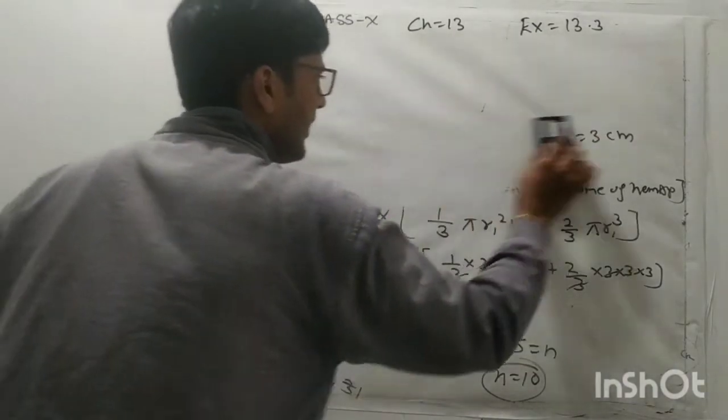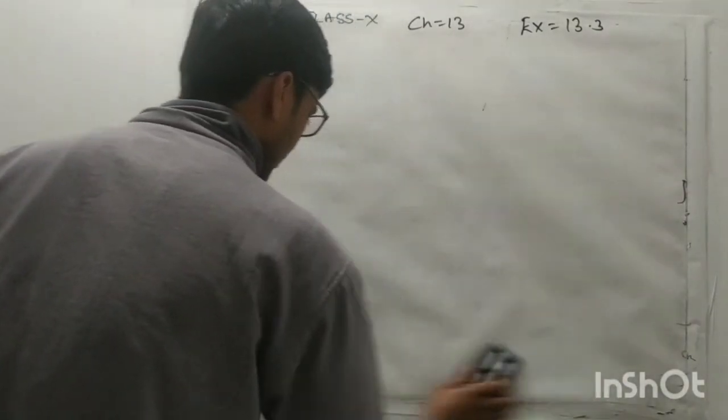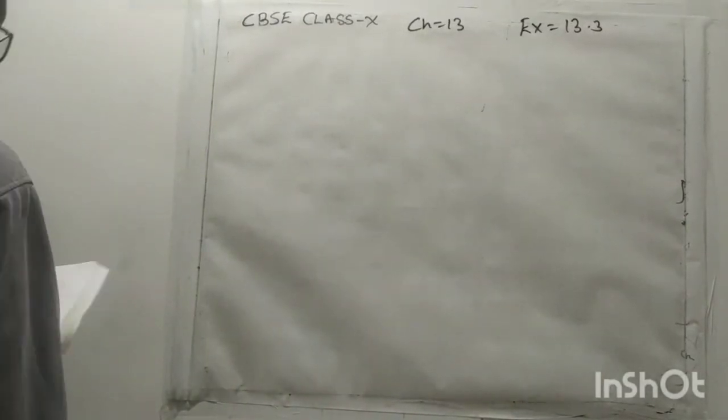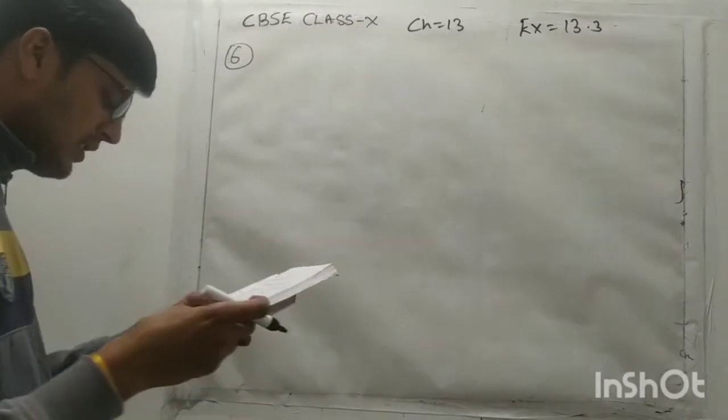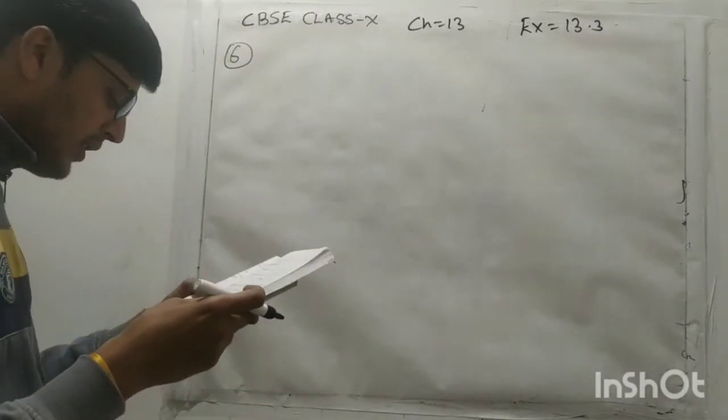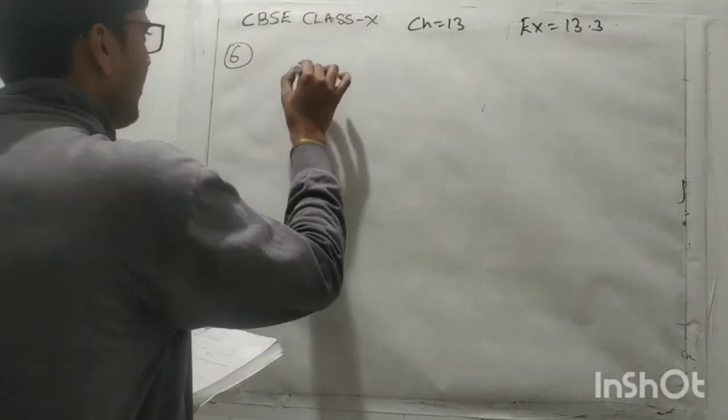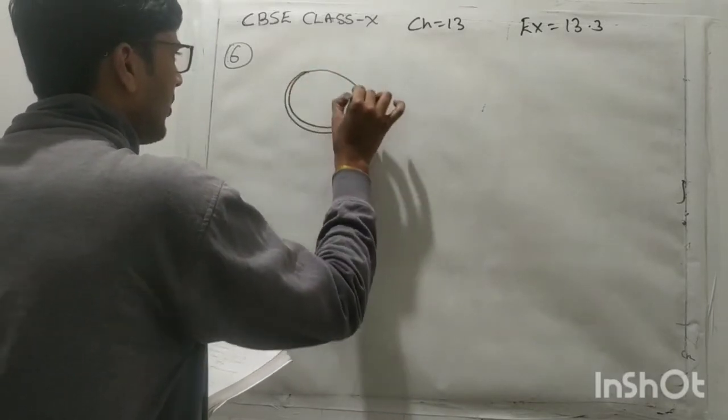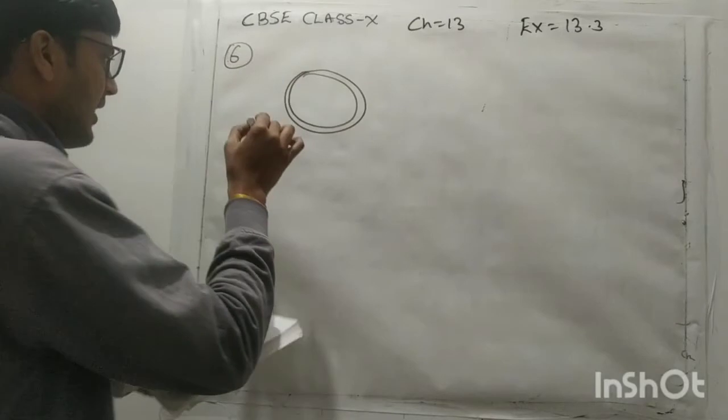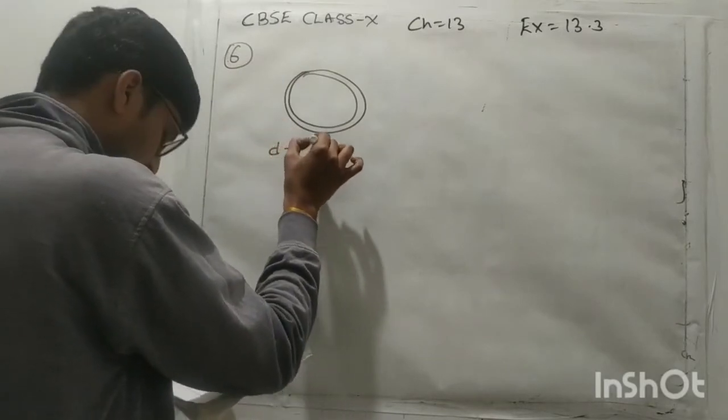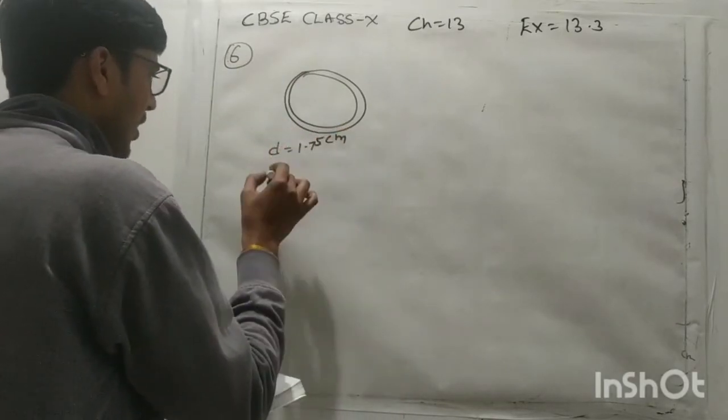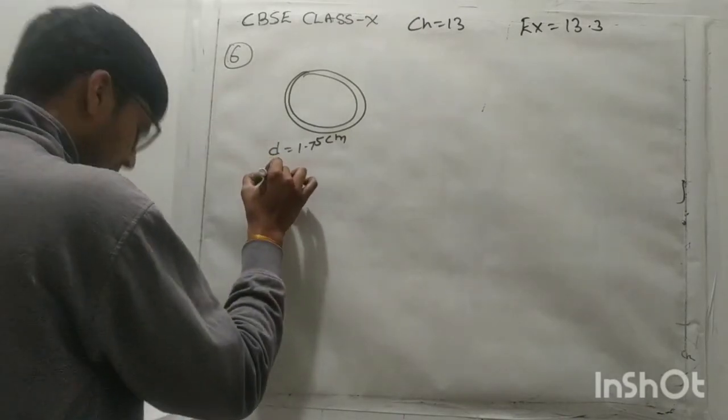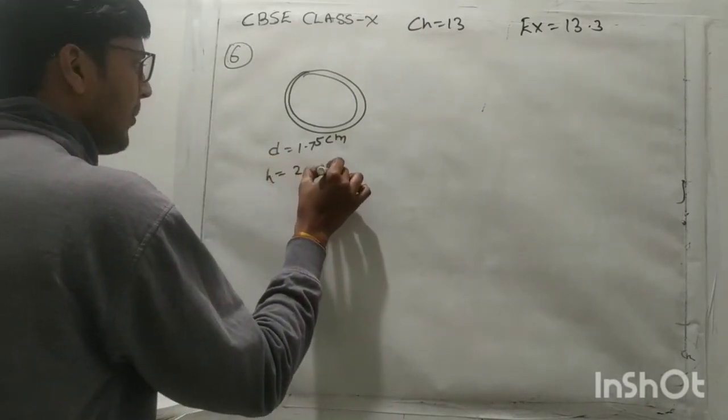So question number 6 is what, how many silver coins 1.75 cm in diameter. Ye aapke paas silver coins hai. To iska kuch aapka diameter aur height bhi hoga. Silver coin, to iska diameter given hai kitna, 1.75 cm. And thickness, it means iski kuch minor height hoga na, h ka value given hai 2 mm.